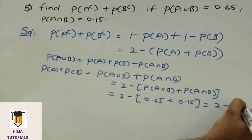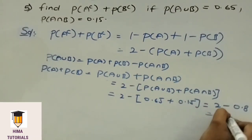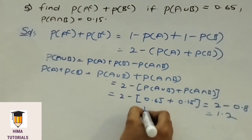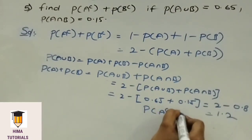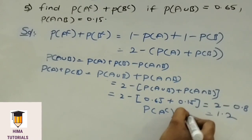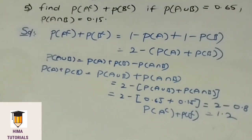Which is equal to 2 minus 0.8, that means 1.2. Therefore, P of A complement plus P of B complement is equal to 1.2. I hope it is clear. Please make a note of it.